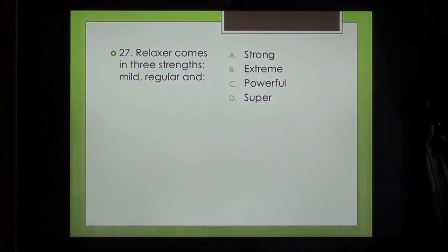Question 27: Relaxer comes in three strengths: Mild, regular and: A. Strong, B. Extreme, C. Powerful, D. Super.